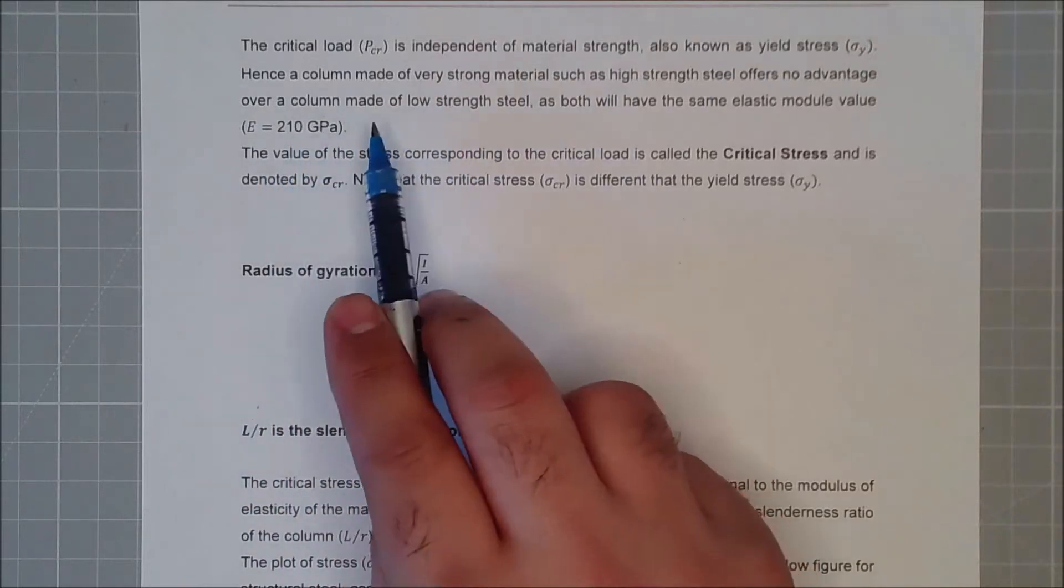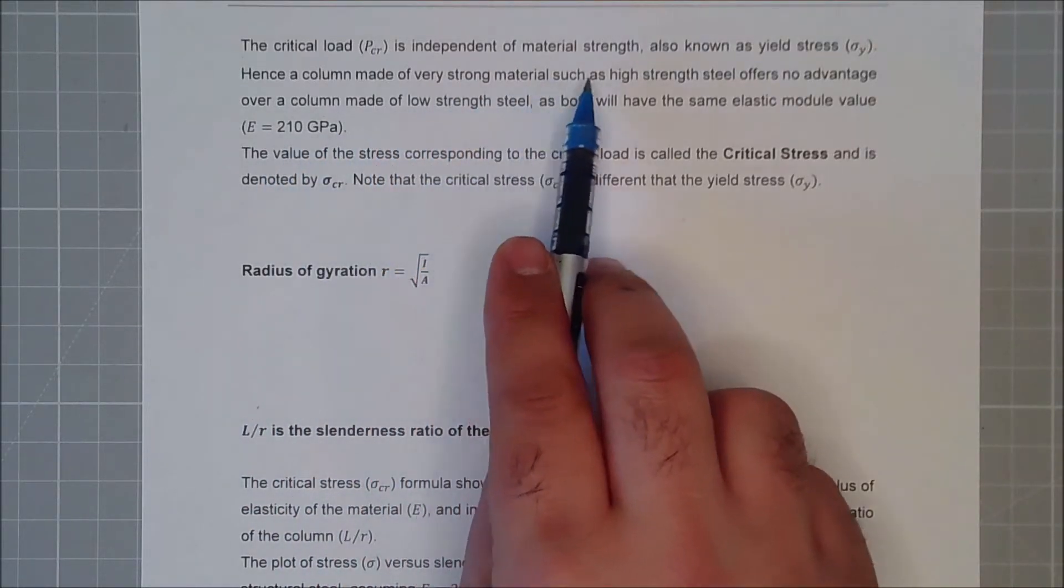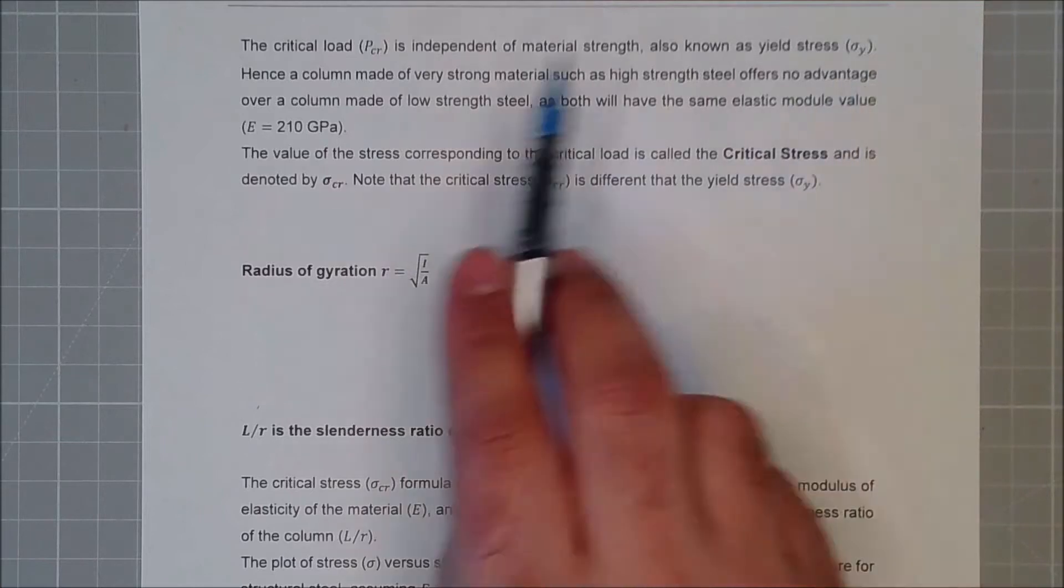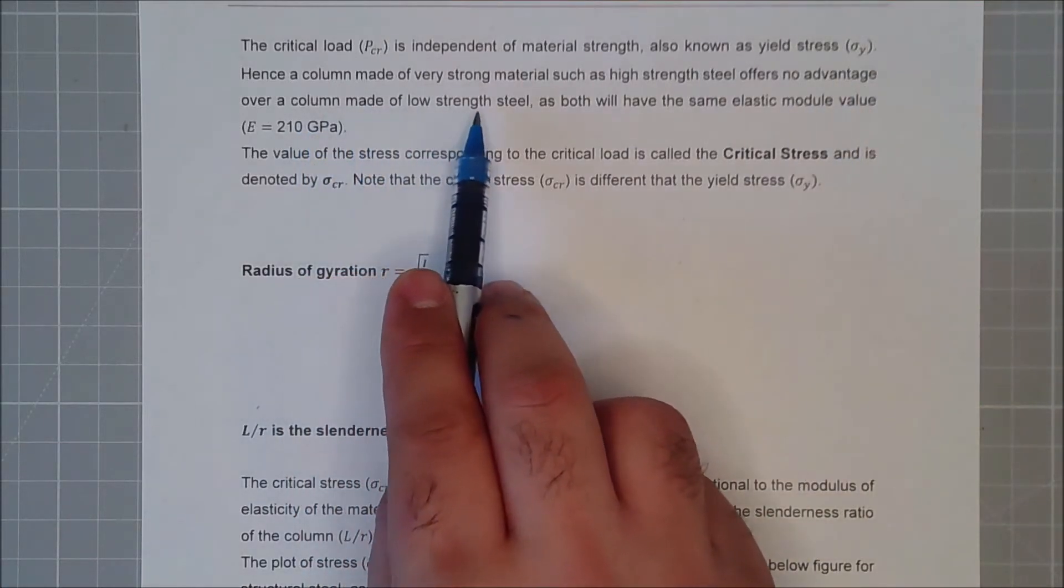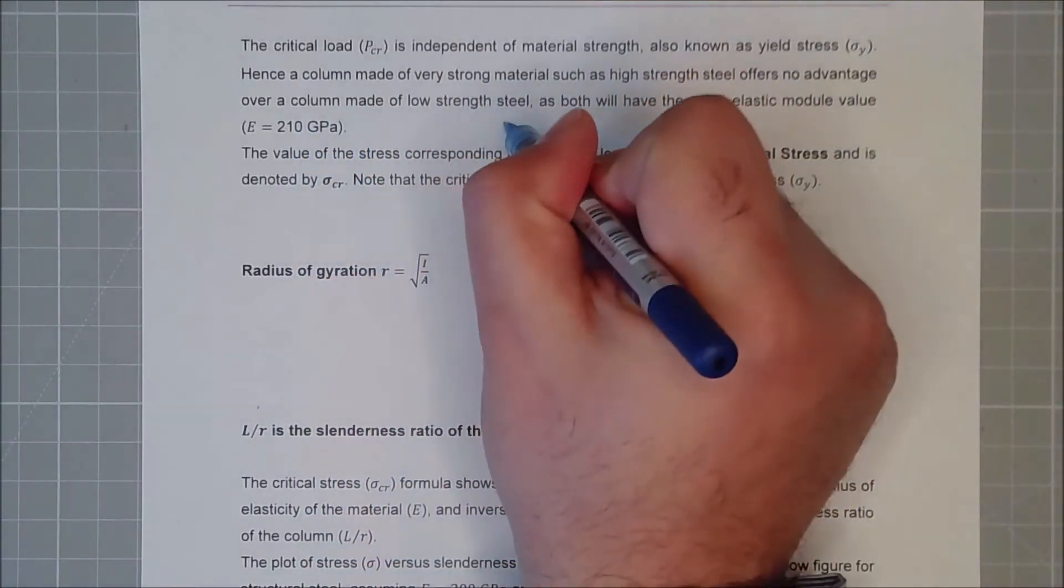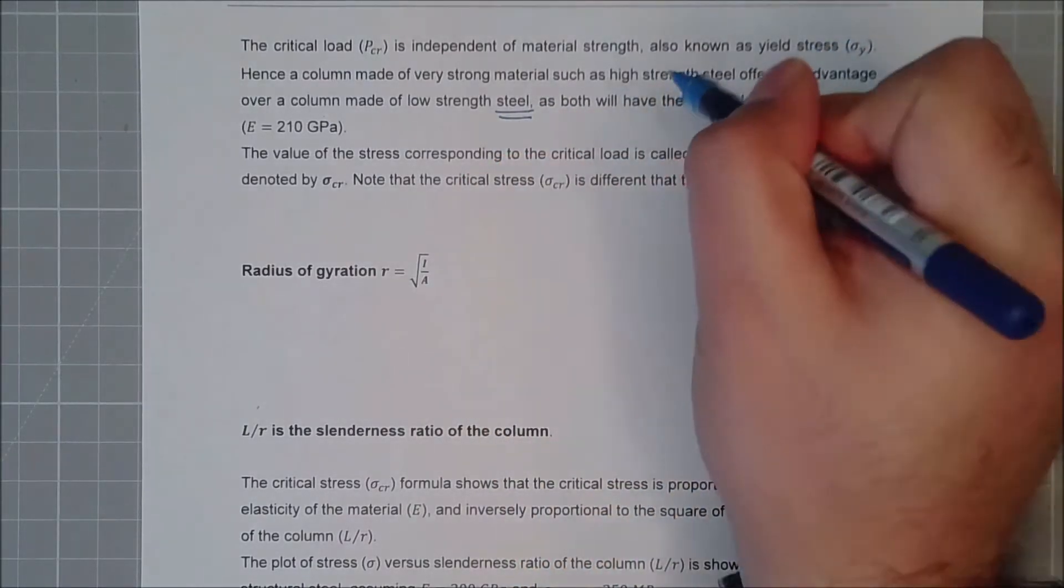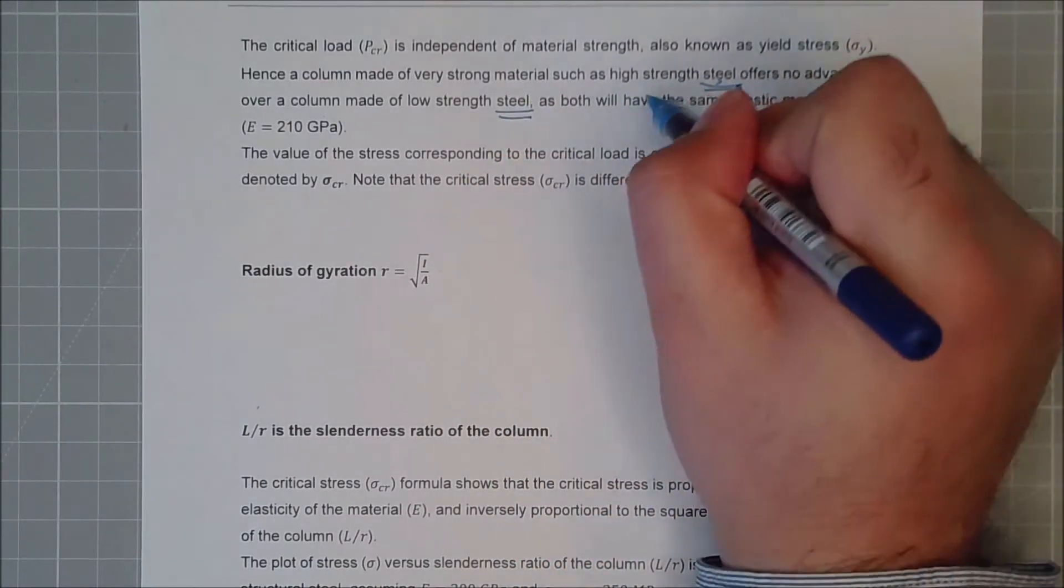So a column made of very strong material, such as high strain steel, offers no advantage over a column made of low strain steel. So pay attention that both of them have the same material, one of them is high strain, so Fy is very high, one of them is low strain.